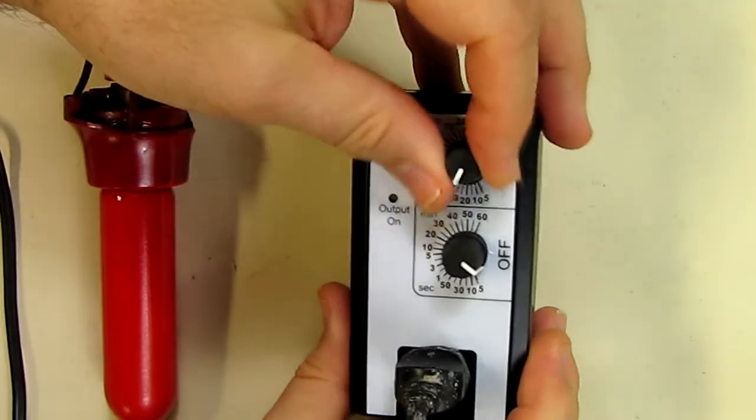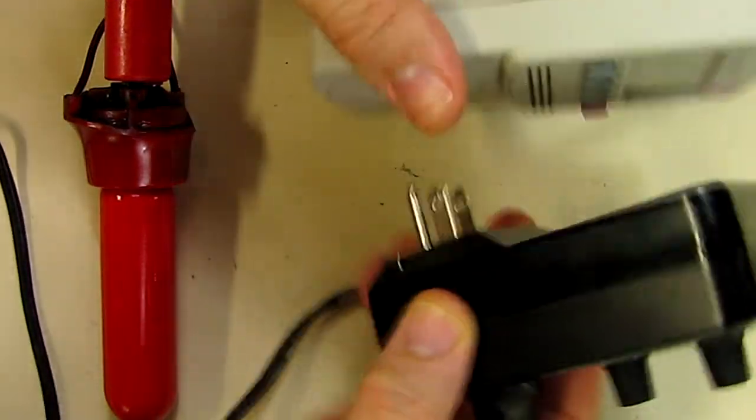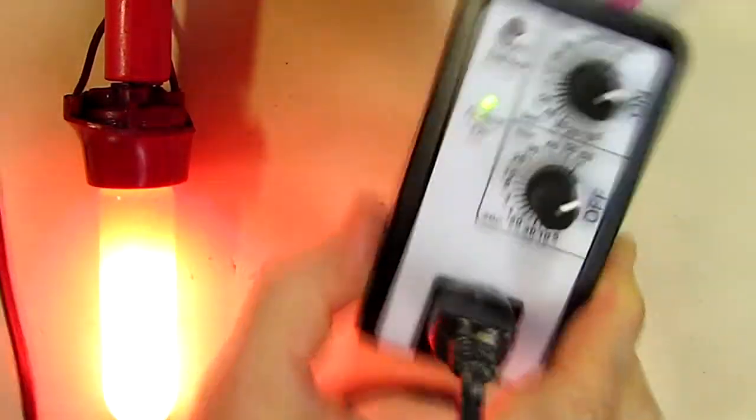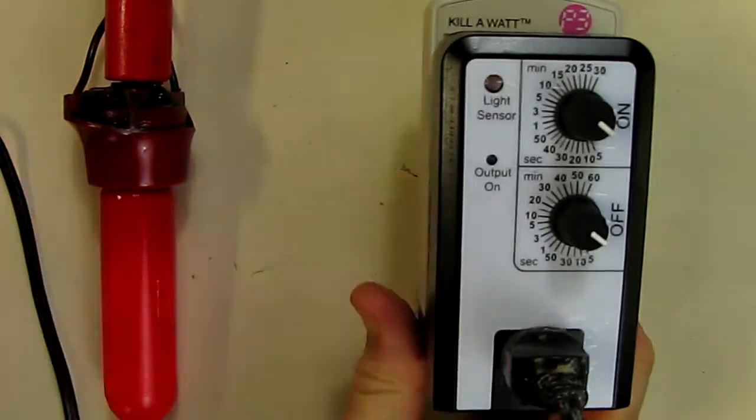So it says set both values to maximum, then after you plug it in set it to minimum. So we're going to plug it in, then we're going to turn it to minimum. Now let's see what we get here.